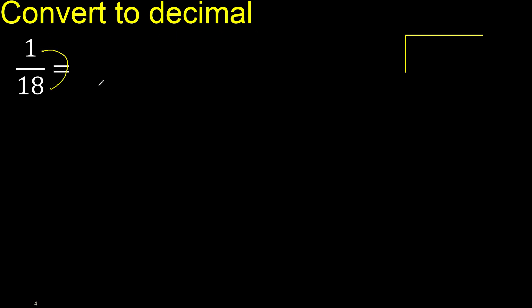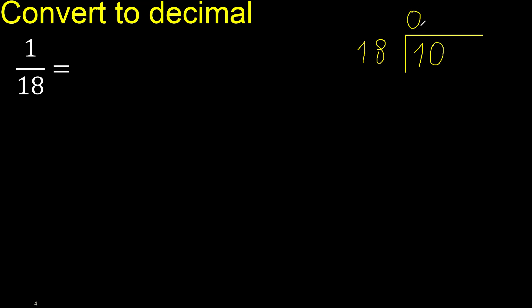1 divided by 18. 1 is less than 18, therefore complete with 0 — 0 point. 10 is less than 18, therefore complete with 0 again. So we have 0.00 so far.